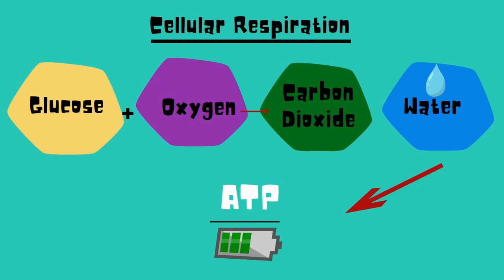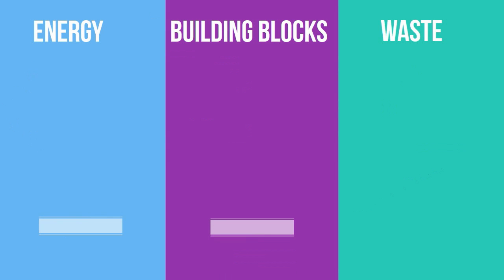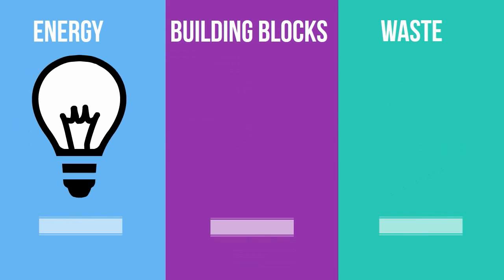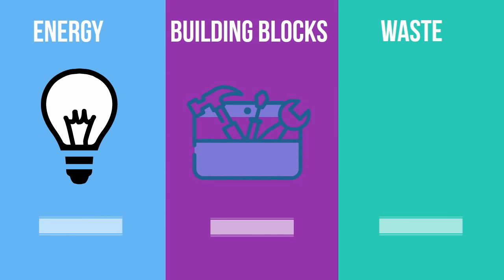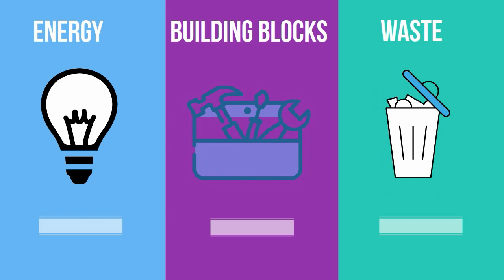You can break metabolism down into three main categories: chemical reactions used for the conversion of food to energy; the conversion of food into building blocks used to make other items like proteins; and chemical reactions needed for the elimination of waste.